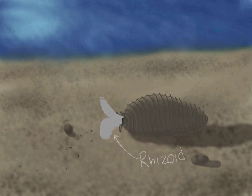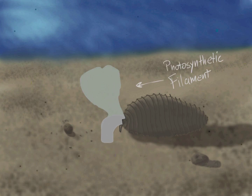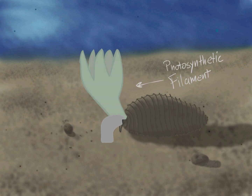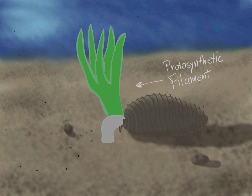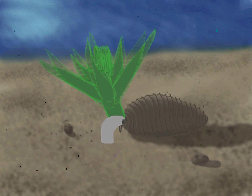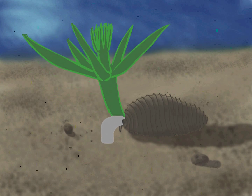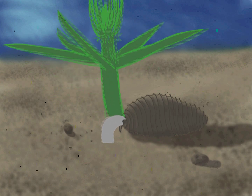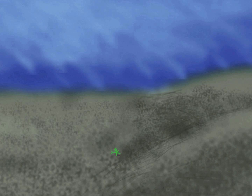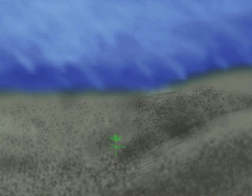At its first division, the larger cell becomes the root-like rhizoid, and the smaller cell becomes the green photosynthetic filament. The green filament bulges and first grows a whorl of five simple branchlets. The apex continues to grow until another whorl appears, with yet another contained within it, and another, and another.